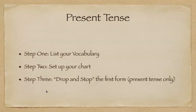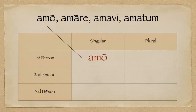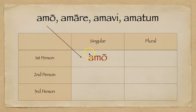Step three: drop and stop, first form only. When we learn how to conjugate some other tenses, we will not do this step. So I take the first form, 'amo,' and drop it into the first slot here, because 'amo' is literally first person singular present tense of our verb 'to love.'